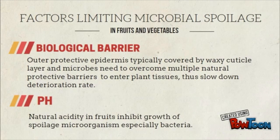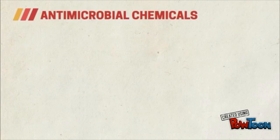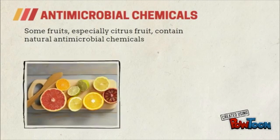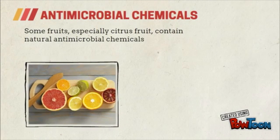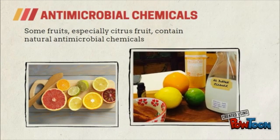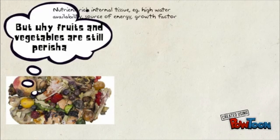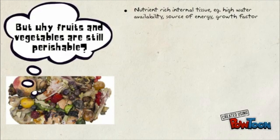Natural acidity in fruit inhibits growth of spoilage microorganisms. Antimicrobial chemicals found in fruit, especially citrus fruit, contain natural antimicrobial chemicals. But why are fruits and vegetables still perishable?